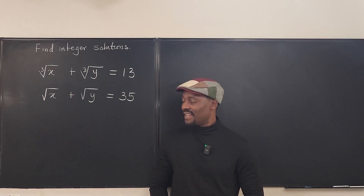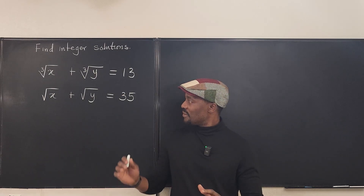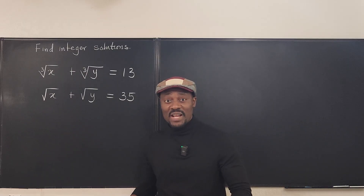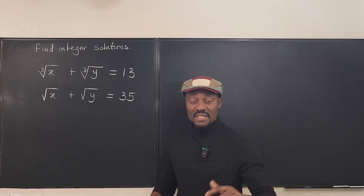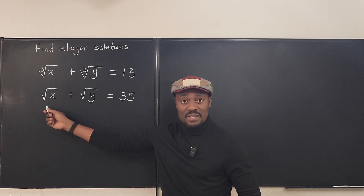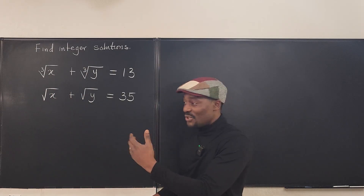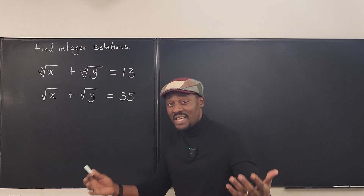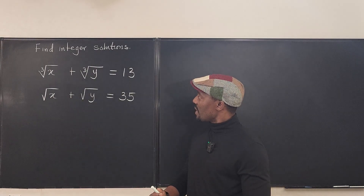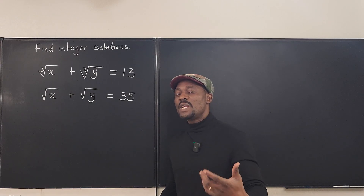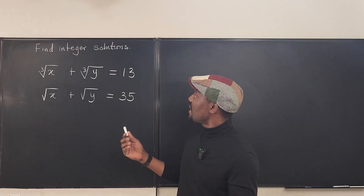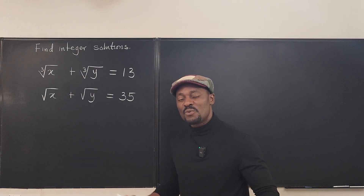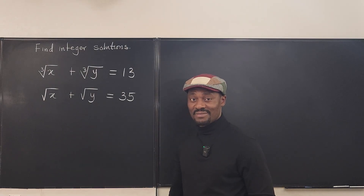Welcome to another video. Let's find integer solutions to this system of radical equations. It doesn't look like I can do any simple eliminations because what's in one equation is not what's in the other. But if you pay attention to how this is set up, you can almost guess the answers. However, I don't want to guess — not everybody can guess correctly — so I'm going to solve it algebraically. Also, if we guess, how do we know those are the only answers? If we have to find integer solutions, there might be more than one set, so solving algebraically is the better option.